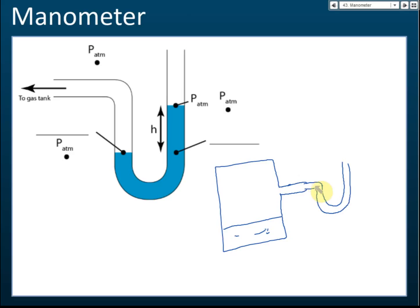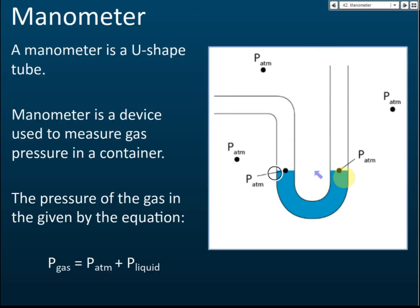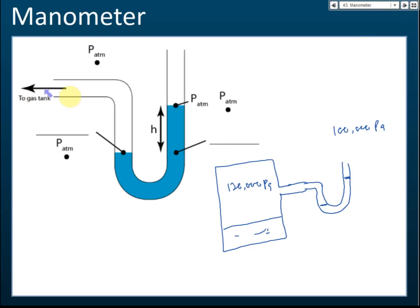If the manometer is connected to a gas tank where the atmospheric pressure is 100,000 Pa and the pressure inside the tank is 120,000 Pa, the gas tank pressure is higher. This higher pressure pushes the liquid down on the side connected to the tank, and up on the other side. Initially the levels are the same, but the higher gas pressure pushes the liquid down on the left and up on the right.